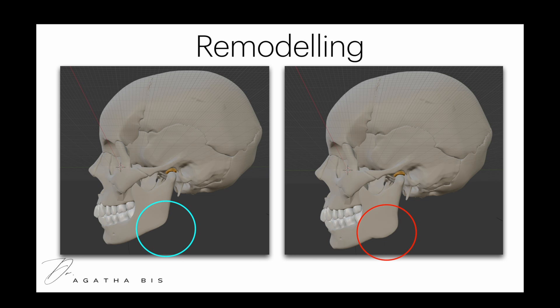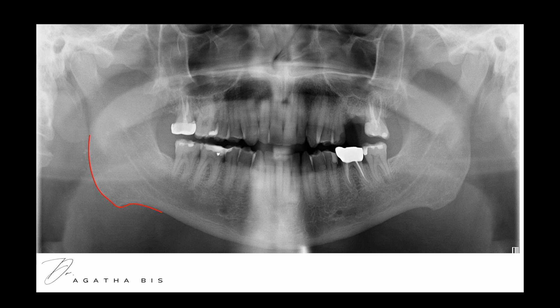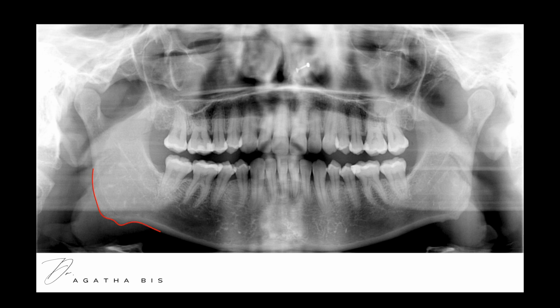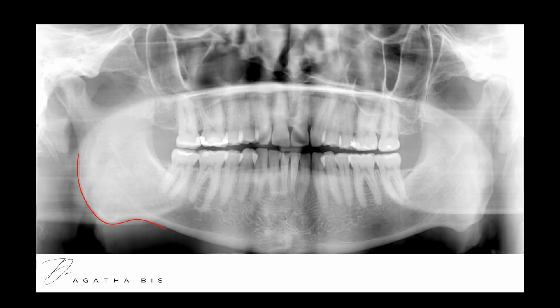Another thing we see on Panorex in TMJ patients is remodeling. Remodeling at the angle of the mandible refers to the process of bone reshaping or structural changes of the lower jaw, typically as a result of chronic clenching or grinding. You can see here how the angle of the mandible changes or remodels, due to stress on the bone resulting in extra bone being deposited to protect and support against the excess forces of clenching or grinding.